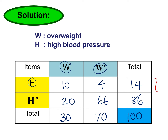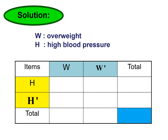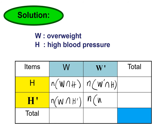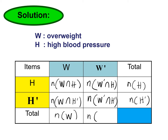When you sum all values, you get a total of 100. This is called the contingency table. As a conclusion, here we can write: the number of W intersect H, the number of W intersect H prime, W prime intersect H, and W prime intersect H prime. The row totals are NH and NH prime; the column totals are NW and NW prime; and NS is the total sample.